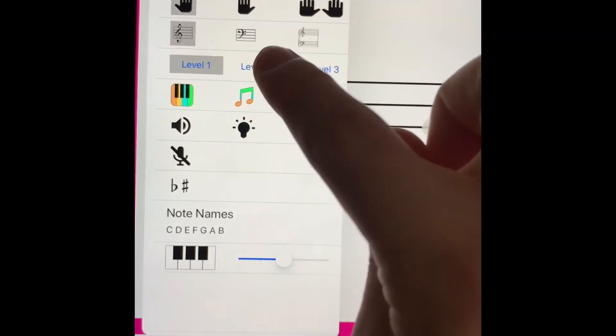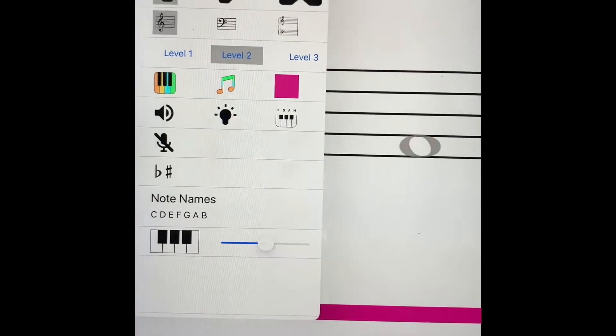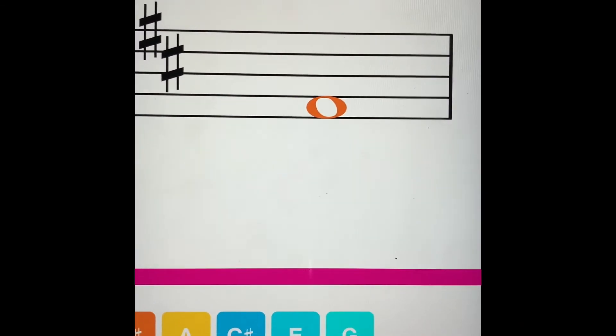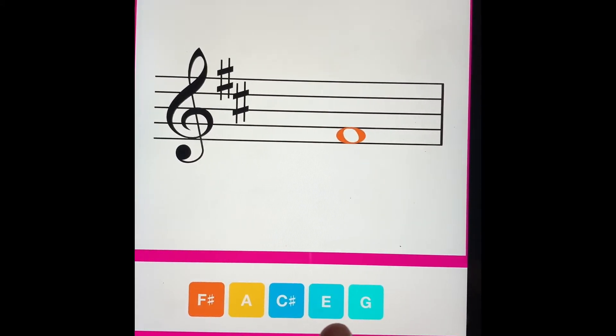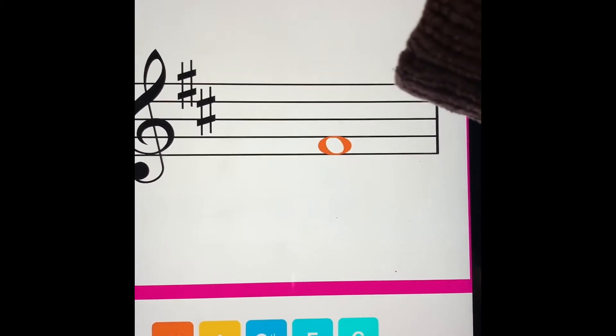Level two is all of the spaces on the staff, including F sharp, A, C sharp, E, and G. They're also color coordinated.